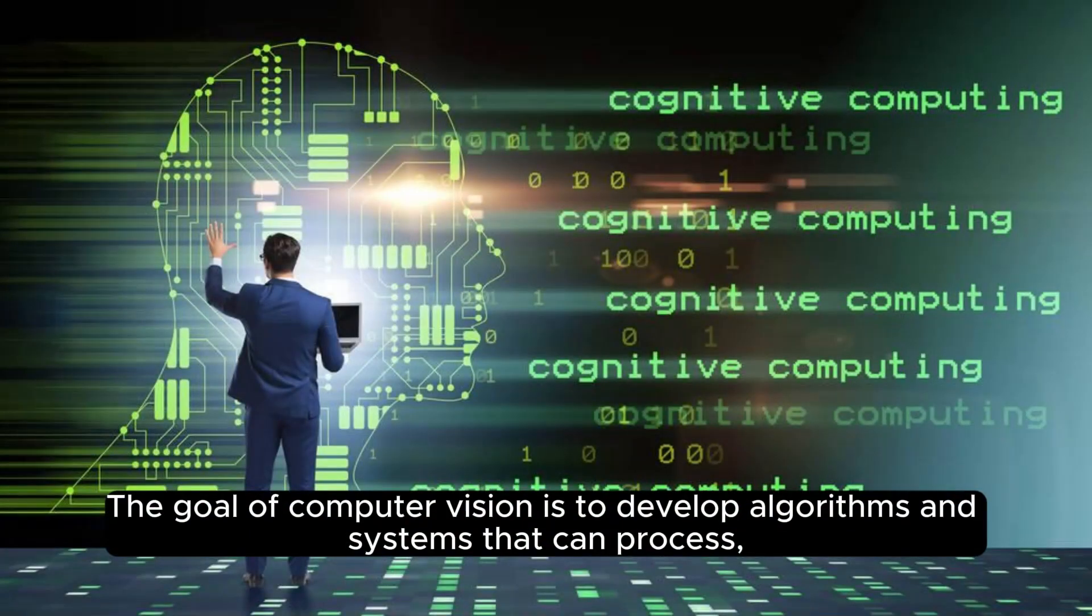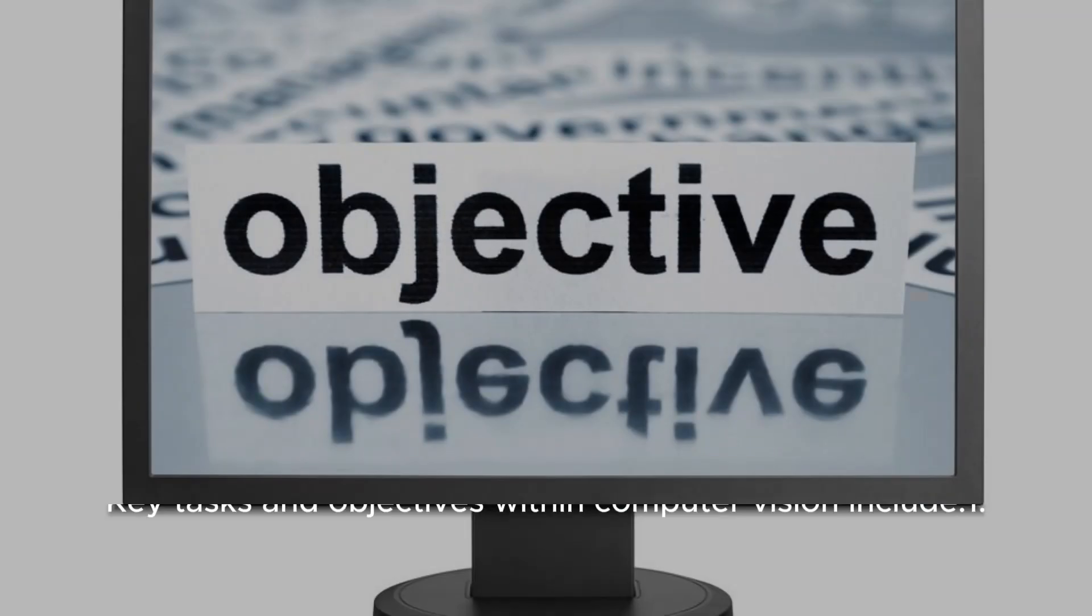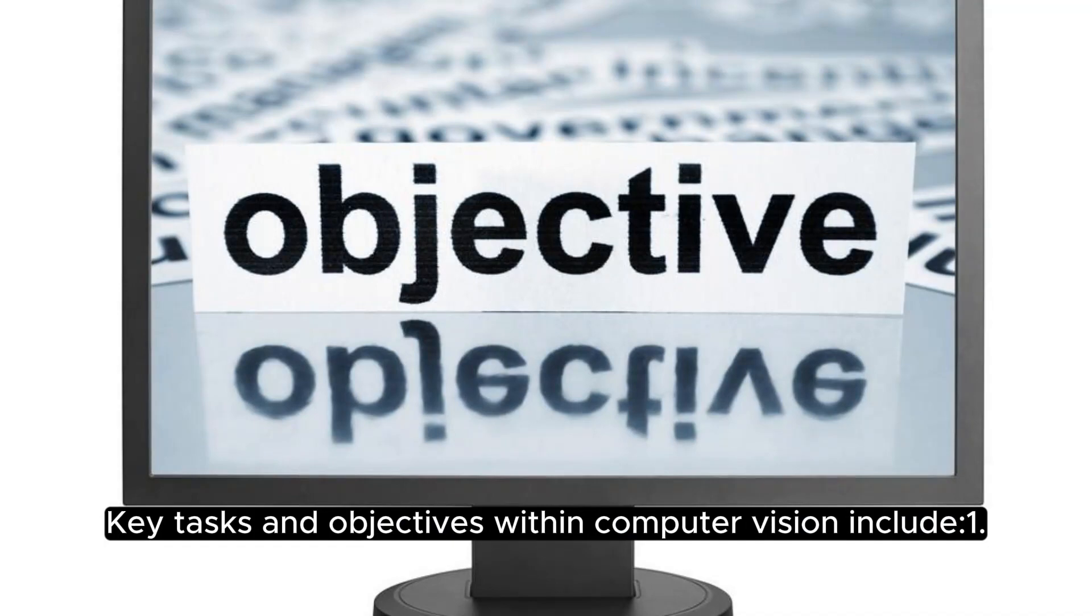The goal of Computer Vision is to develop algorithms and systems that can process, analyze, and make decisions based on visual data from the real world, such as images and videos. Key tasks and objectives within Computer Vision include: